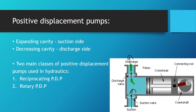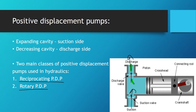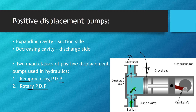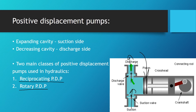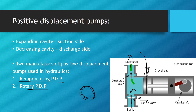Depending on how the suppressing element moves, we have two classes of positive displacement pumps: reciprocating positive displacement pumps and rotary positive displacement pumps. The piston pump is a reciprocating positive displacement pump because the piston reciprocates left and right. Rotary positive displacement pumps use rotational motion.